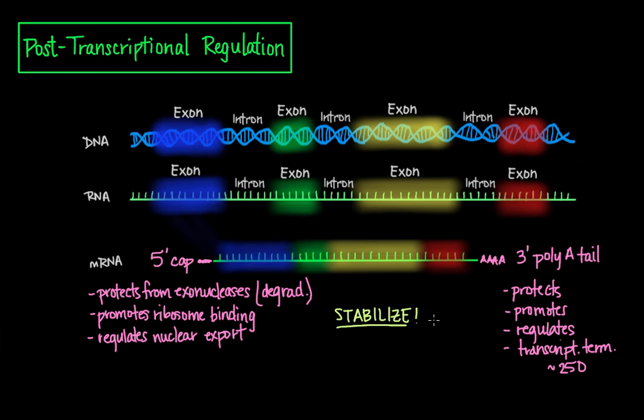So once the mRNA has donned its cap and tail and had its introns spliced out, it's now ready to exit the nucleus to be translated into a protein. Now, additionally, there's one more type of RNA regulation called RNA editing,